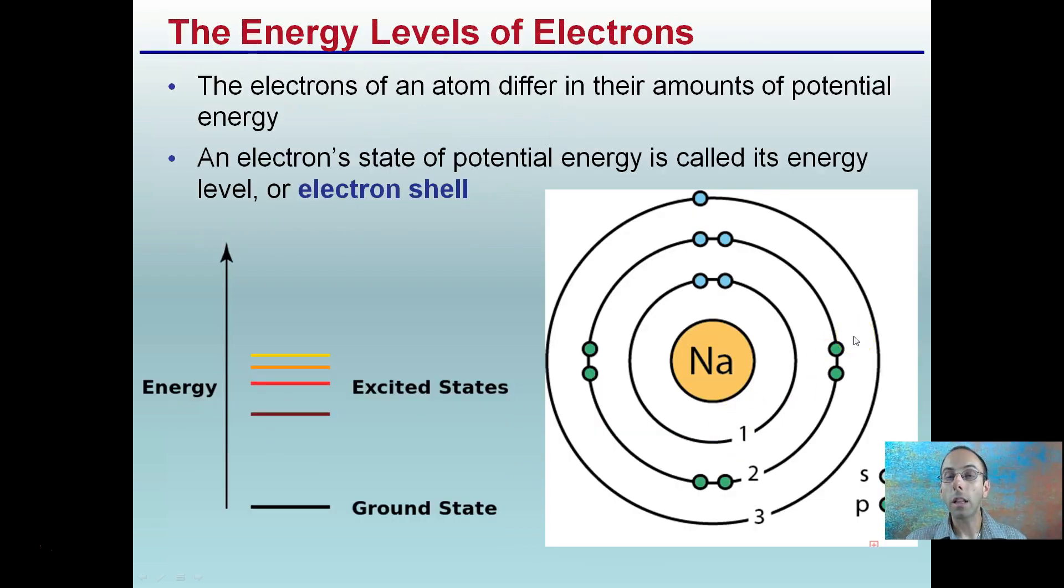Continuing on, the energy levels of the electrons. The electrons of an atom differ in their amounts of potential energy. An electron state of potential energy is called the energy level or its electron shell. The very bottom here is called the ground state. As those electrons work their way out, their energy level increases. These out here would be considered a bit more of an excited state, and electrons can jump to these different electron shells through different energy levels. Realize the ground state is the most basic, lowest energy form, and excited states, as you work your way up, the amount of energy increases that those electrons have.